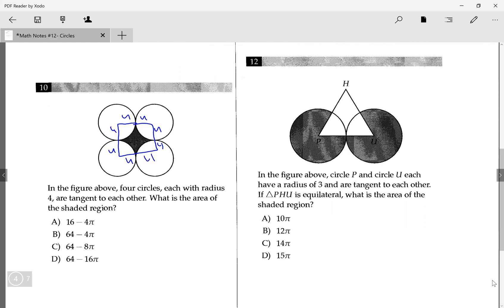So that means each side length of the square is going to be 8, and you square that to find the area of the square, which is going to be 64.